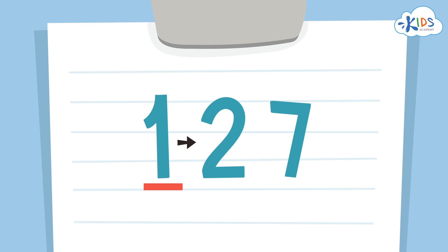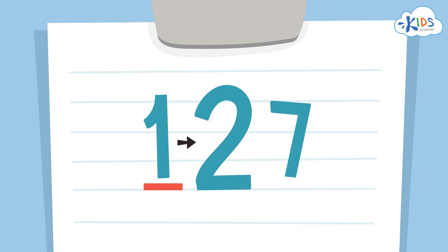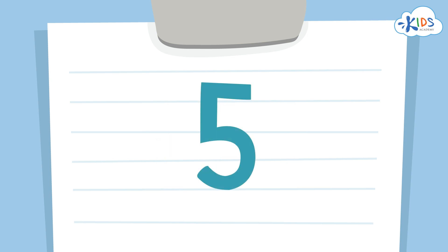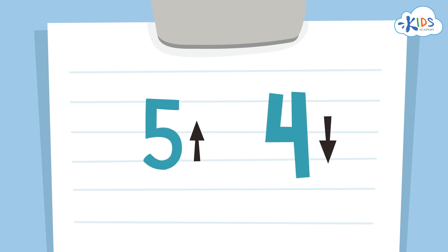So in this case, we're rounding to the nearest hundred, so we'll have to look at the place to the right of the hundreds, which is the tens. The same rule applies when rounding to the hundreds place as it does for rounding to the tens place. Five is the key number — if it's five or higher, you round up, but if it's four or lower, you have to round down.